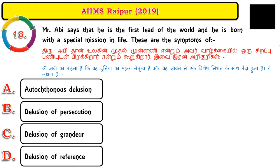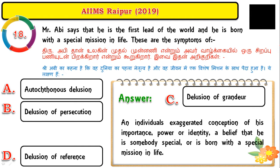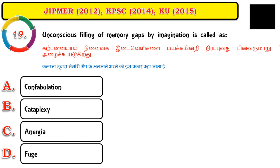Question number eighteen: Mr. Abhi says that he is the first leader of the world and was born with a special mission in life. These are symptoms of delusion of grandeur. The person considers himself superior to everyone, having special powers and a special identity — also known as grandiosity, a major feature seen in mania.